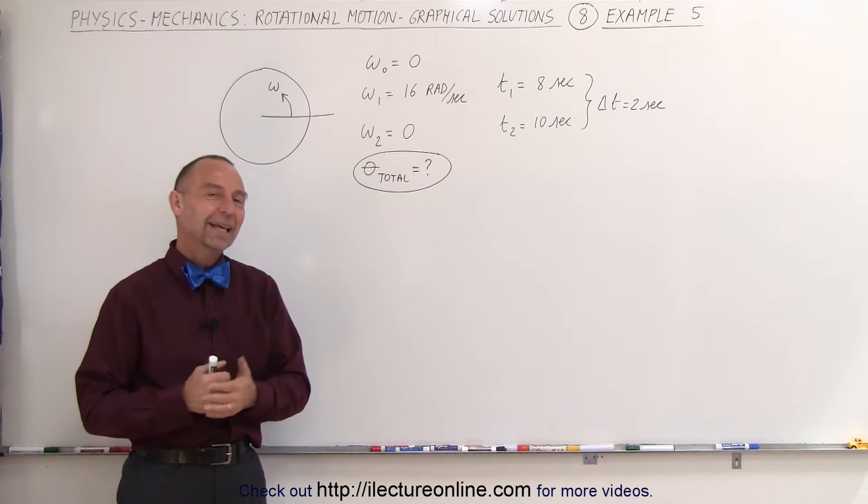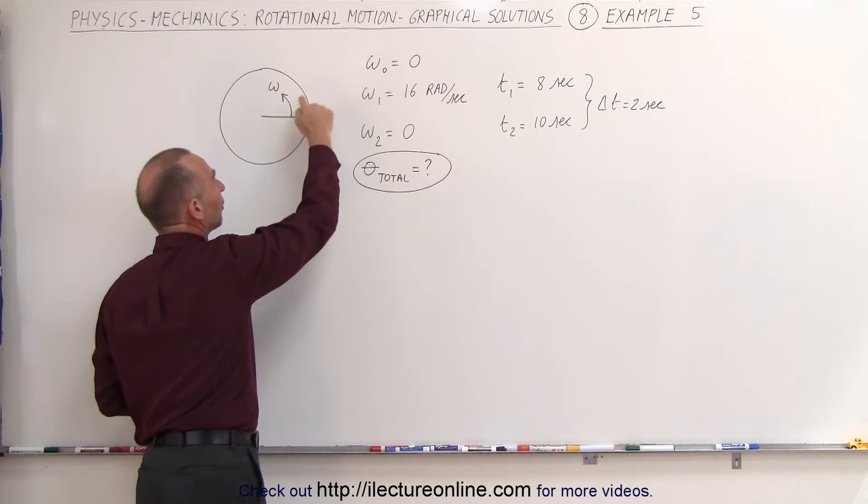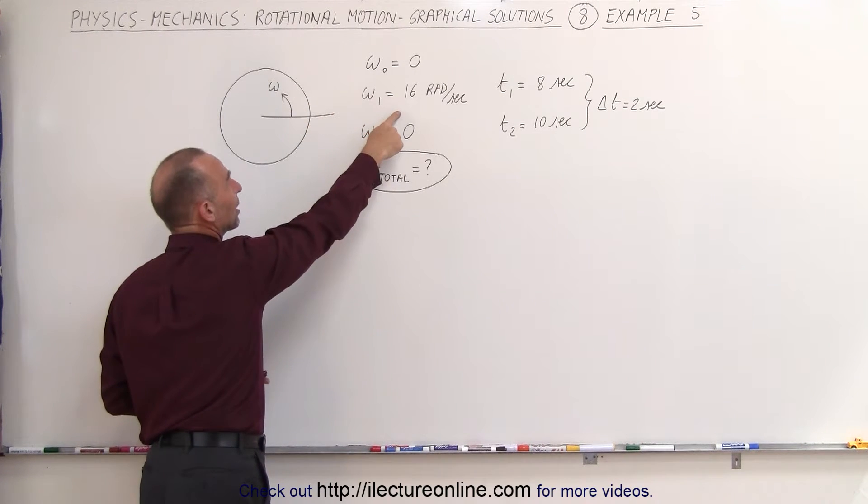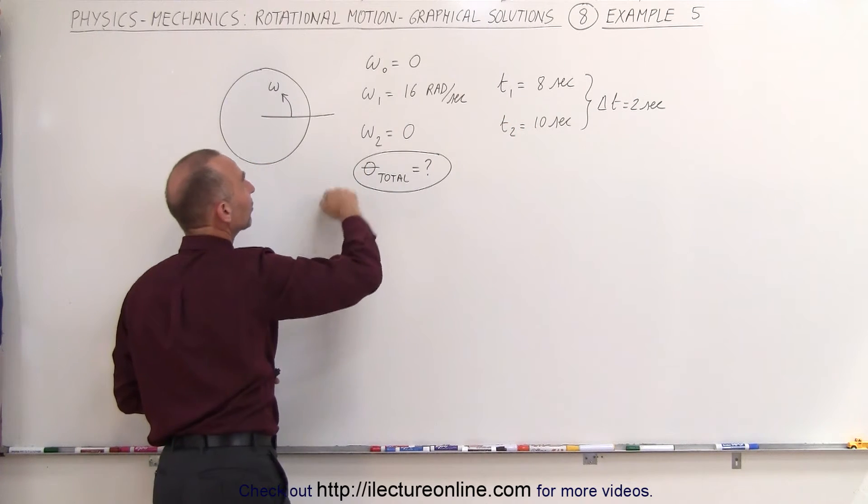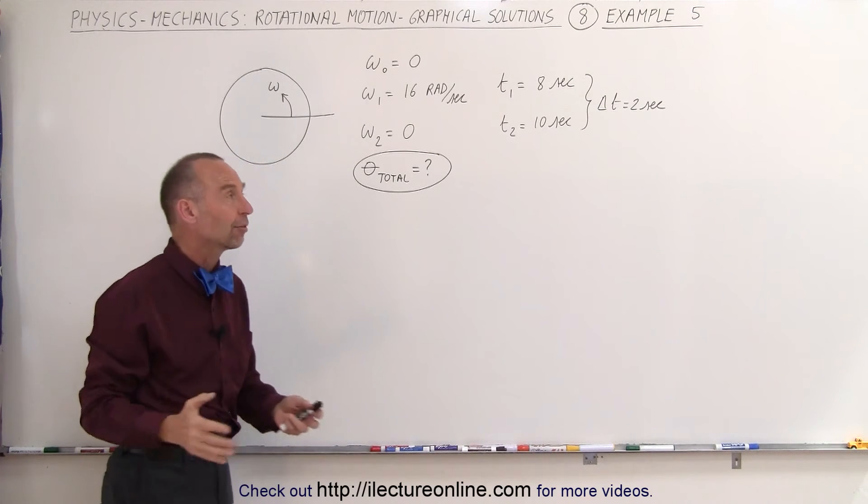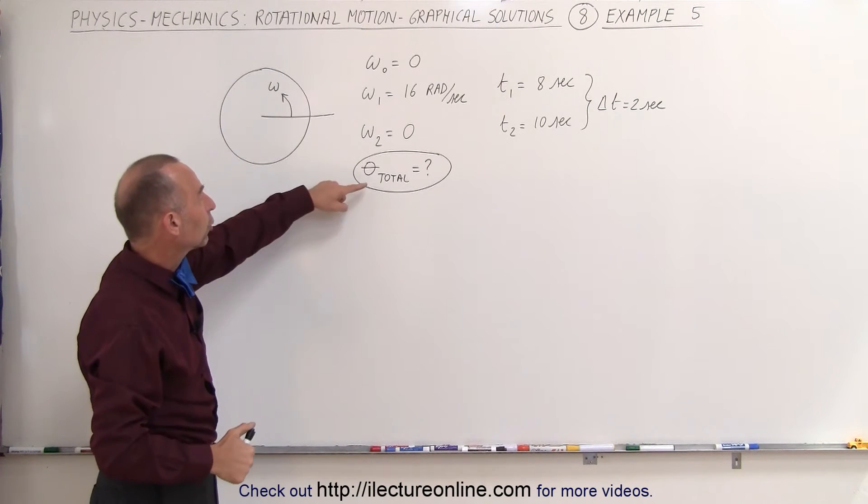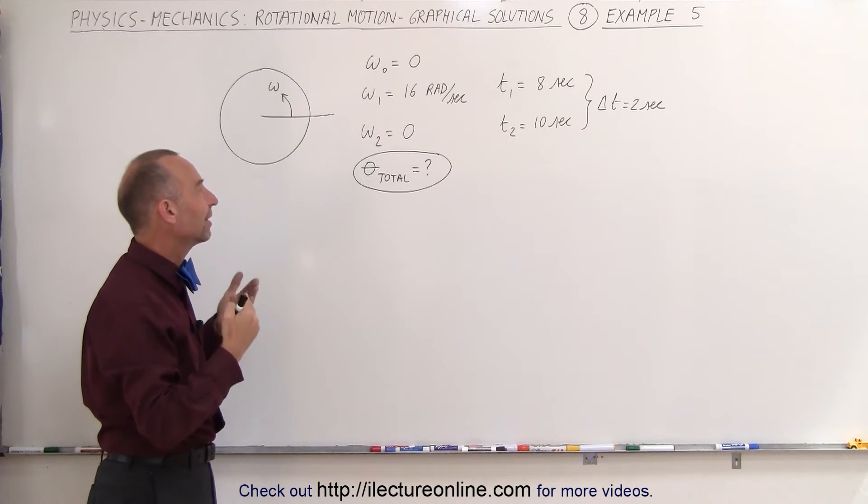Welcome to ElectronLine. In this example we have an object that starts at zero angular velocity, speeds up to a maximum of 16 radians per second in 8 seconds, and then in the next 2 seconds goes back down to zero radians per second for a total time elapsed of 10 seconds. Ultimately, the question is, what is the total angular distance covered during the 10 seconds?